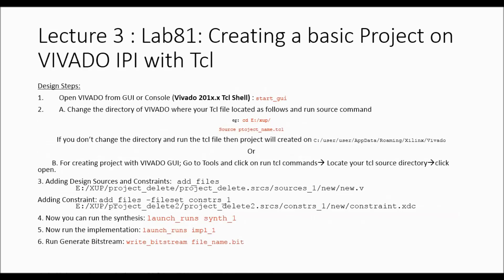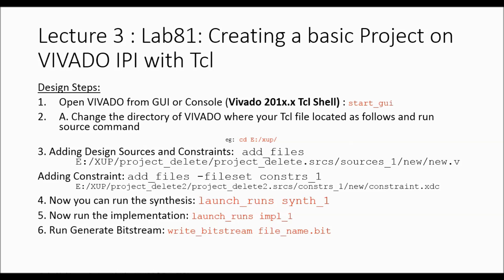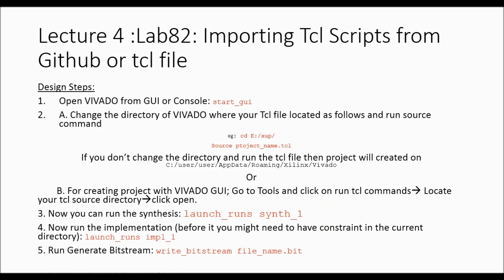In Lab 8.1 we create a basic project on Vivado IP integrator with Tcl. We can start Vivado's graphical user interface using the command 'start_gui' from the Tcl shell, then change the Vivado directory from the Tcl console and add design and constraint sources. We run synthesis with 'launch_runs synthesis_1', implementation with 'launch_runs impl_1', and generate the bitstream with 'write_bitstream filename.bit' — for example, 'write_bitstream new.bit' to generate the corresponding bitstream file.